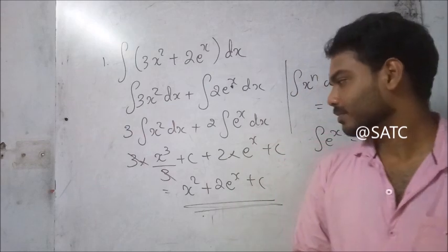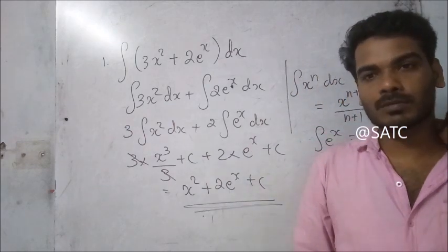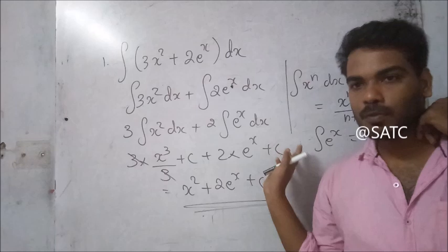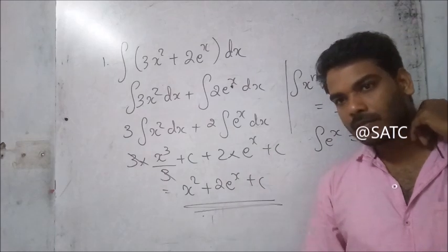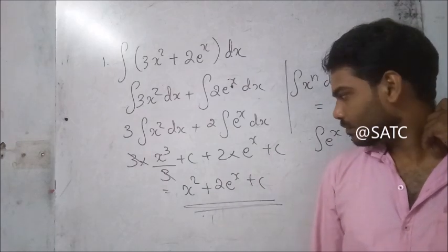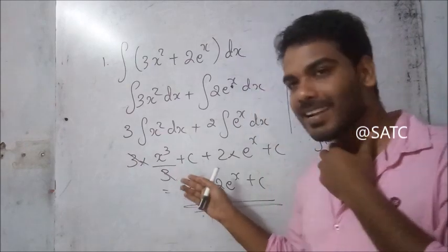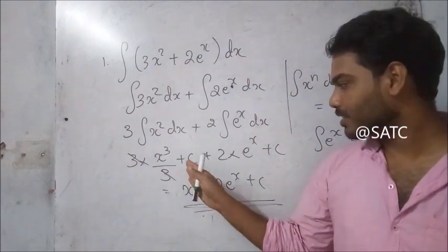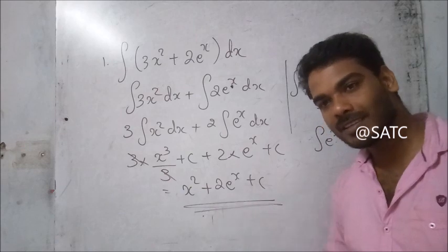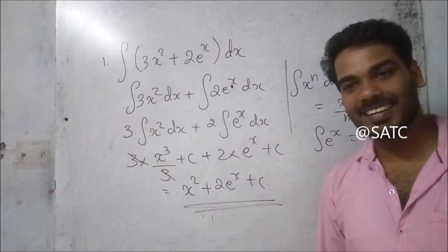We will combine the constants. Suppose we find this is 4, then this is 5 — we will be able to see that the constants are combined into a single constant C.